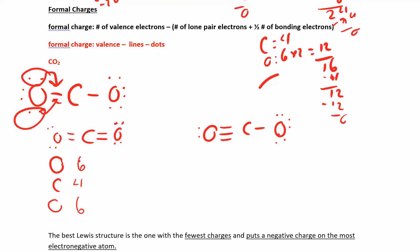For the first CO₂ structure (O=C=O): oxygen has 6 valence electrons, 2 lines, and 4 dots — formal charge of zero. Carbon has 4 valence electrons, 4 lines, and no dots — formal charge of zero. The other oxygen also has 2 lines and 4 dots — formal charge of zero. All zeros, which is exactly what you want.